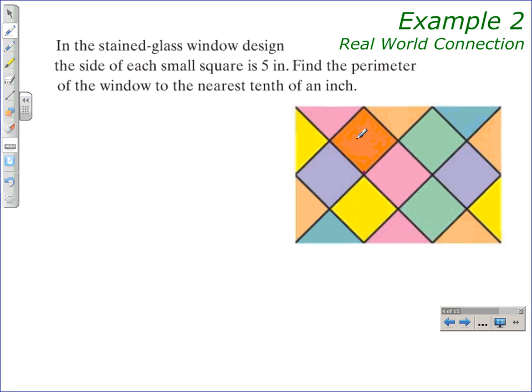The stained glass window is a tessellation made up of squares. The squares are turned 45 degrees so they appear as diamonds. We can split each square into triangles. Since the length of each side is 5 inches, it splits into an isosceles right triangle.